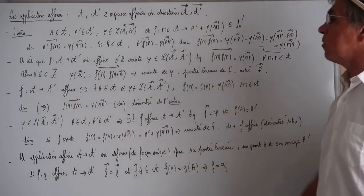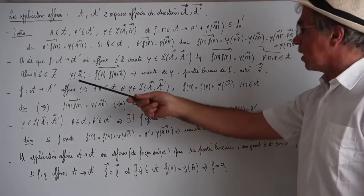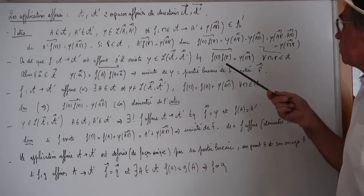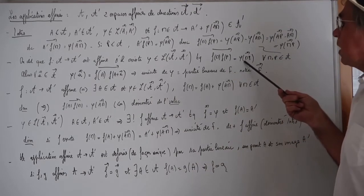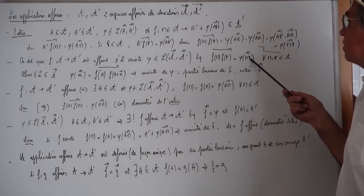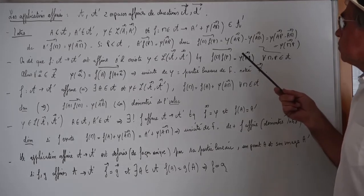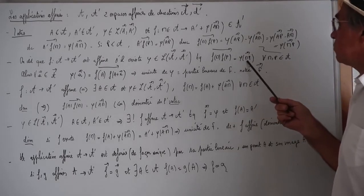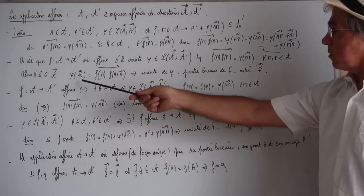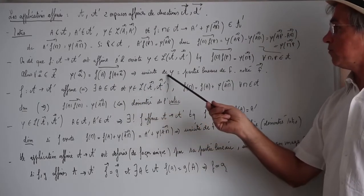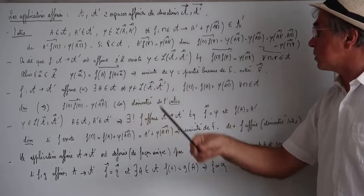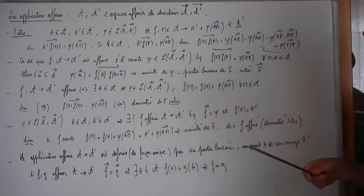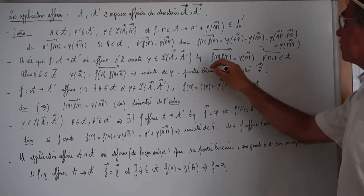Quel que soit le vecteur U appartenant à la direction de A, on va avoir Φ(U) égal au vecteur F(A)F(A+U). Il suffit de remplacer dans cette relation M par A et P par A+U. Cela assure l'unicité de Φ, puisque là il n'y a que F et rien d'autre. Donc je note cette application Φ la partie linéaire de F, et je la note F avec une flèche.